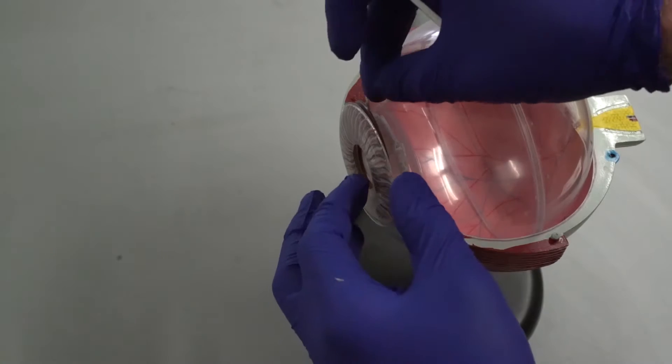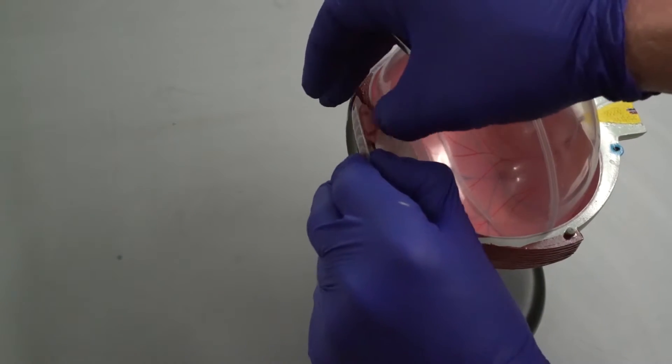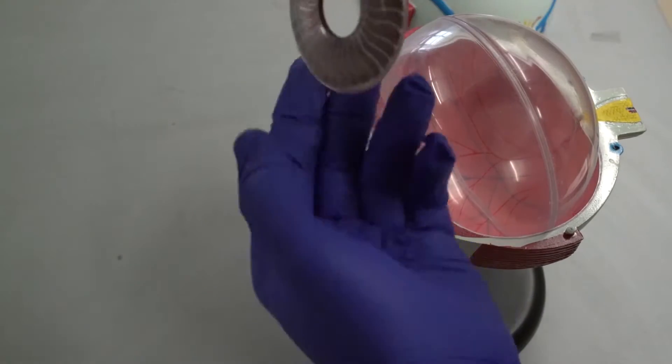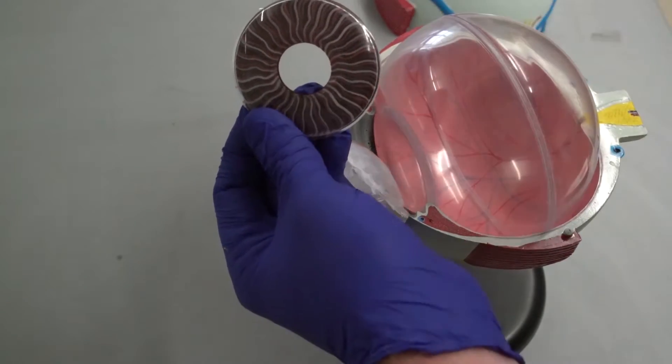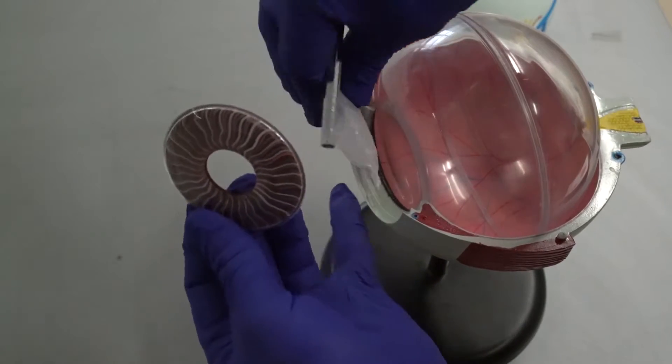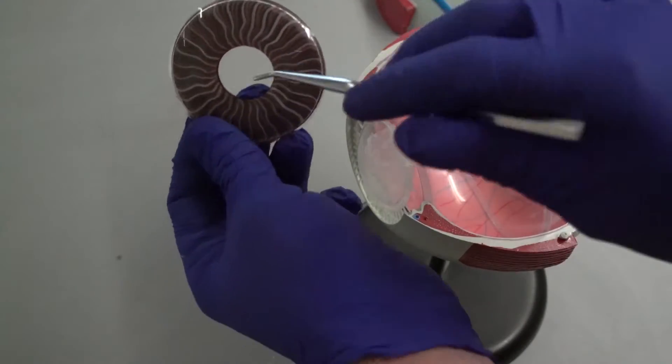But right behind that, you're going to see your iris. And your iris is actually what controls the shape of your pupil. So your pupil is just an empty space. It's not a real structure. A lot of people think it is a structure in your eye, but it's not.